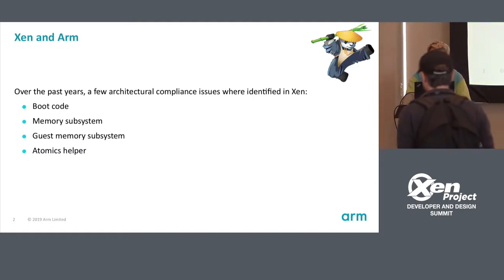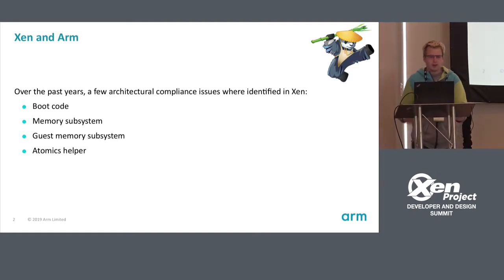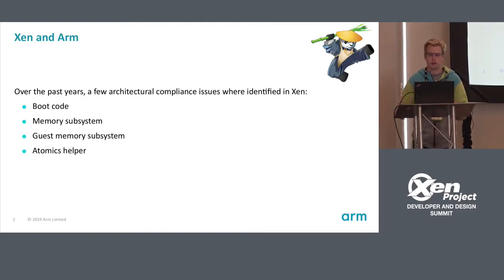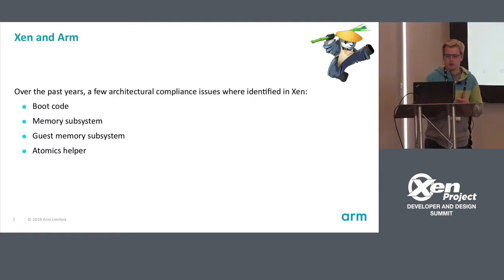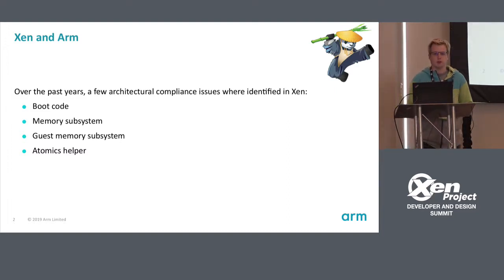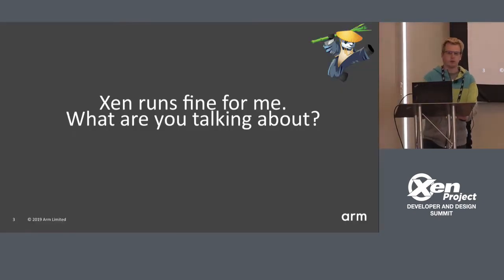Over the past years we noticed a few places where Xen is not very compliant with the architecture — the ARM ARM, which is also the Bible for ARM. Most of the places where the main part of non-compliance was identified was the boot code and the memory subsystem. Every time I speak about it and someone is working on it, they say: 'Oh there is a compliance issue?' They're always asking me, 'But Xen is running fine for me — what are you talking about?'